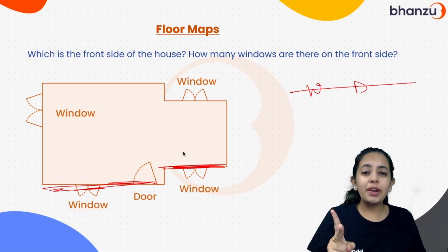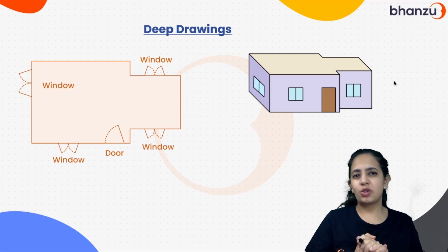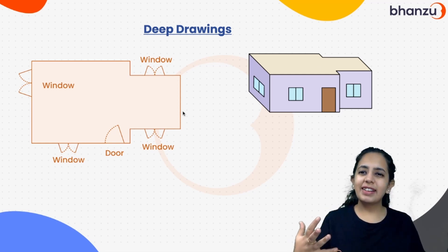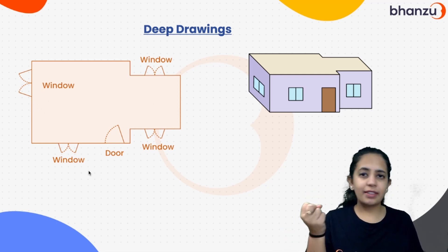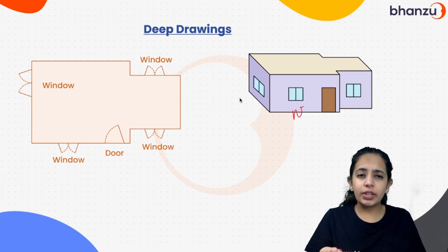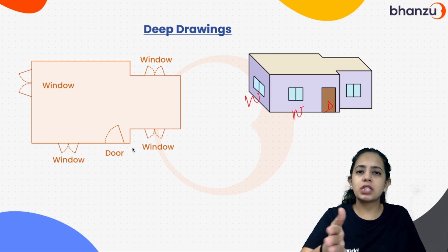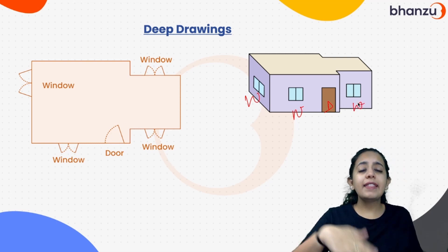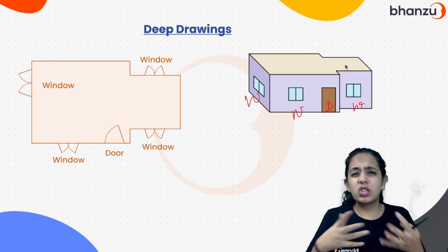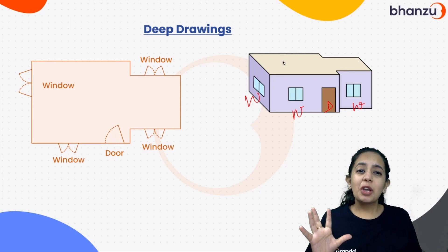Now moving ahead to deep drawing. Here we have drawn a window, then another window, then a door. Now there is a gap — we shift a little backwards and show another window there. There's also a window at the back, but of course we cannot draw what's hidden — only the visible portion is shown.